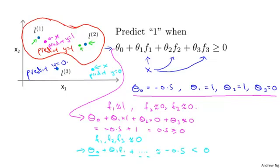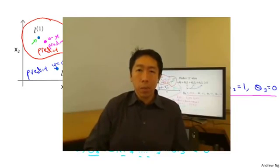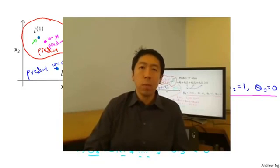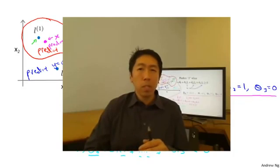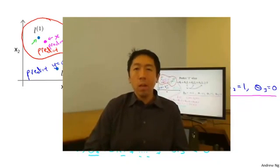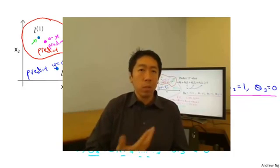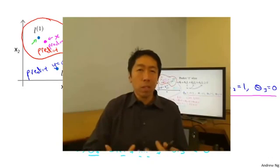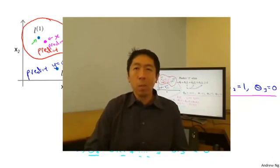This is part of the idea of kernels and how we use them with support vector machines — we define extra features using landmarks and similarity functions to learn more complex nonlinear classifiers. But there are a couple of questions we haven't answered yet: how do we choose these landmarks, and what other similarity functions can we use besides the Gaussian kernel? In the next video, we'll answer these questions and show how SVMs with kernels can powerfully learn complex nonlinear functions.